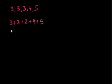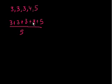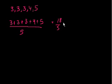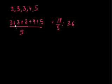We divide that sum by the number of numbers we have — divide by 5. That gives us 18 over 5, which is 3 and 3 fifths, which is 3.6. So 3.6 is the population mean for this population of numbers.